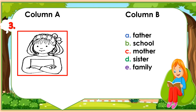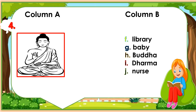Number 3: Look at this picture. What's this? Match this picture with a correct word in column B. A. Father. B. School. C. Mother. D. Sister. E. Family. Write the letter only.